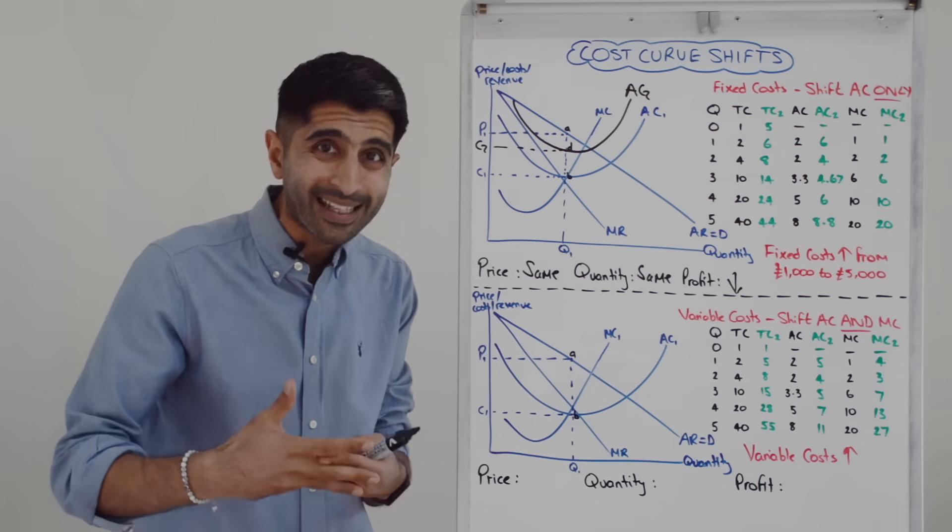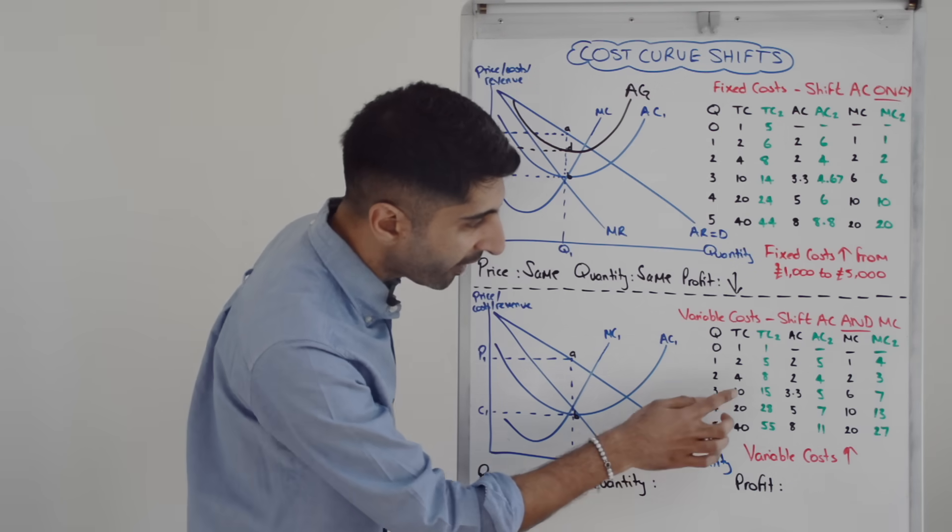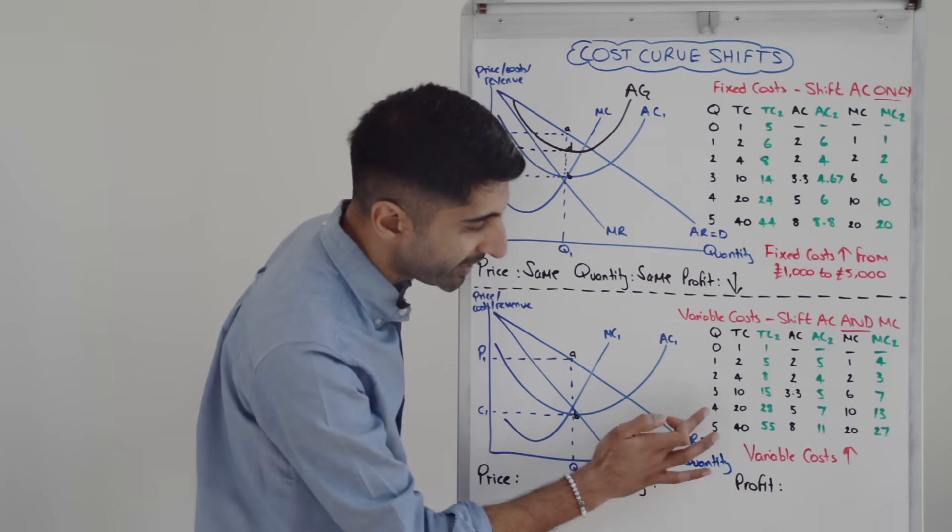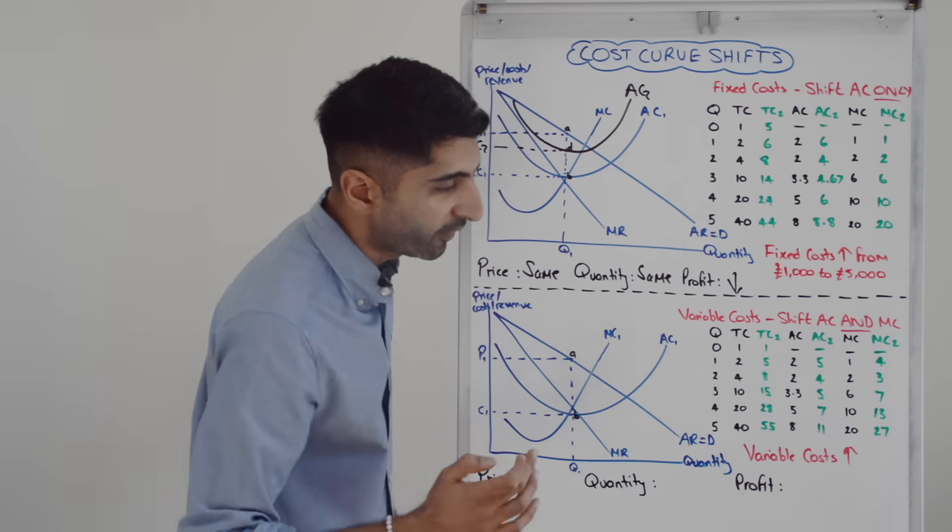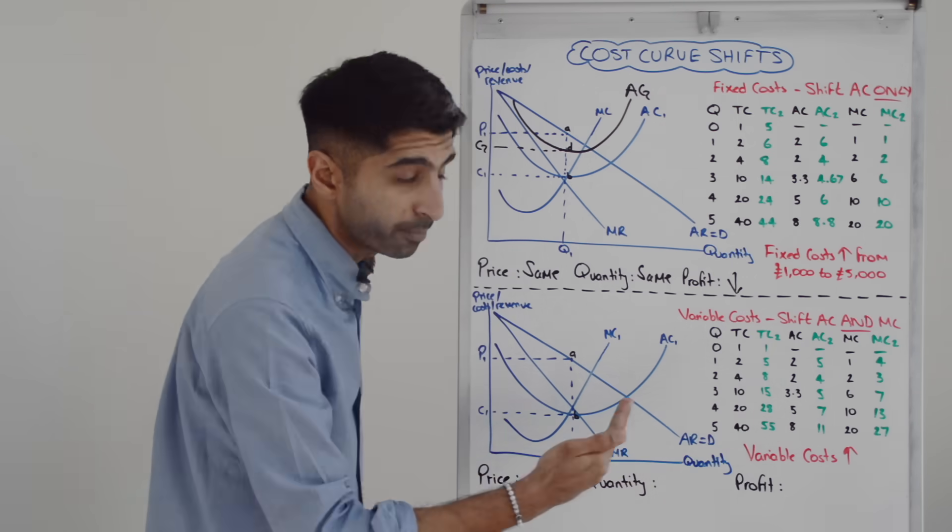So to work out average cost, we just take TC2 and divide it by quantity. So 5 divided by 1 is 5, 8 divided by 2 is 4, 15 divided by 3 is 5, 28 divided by 4 is 7, 55 divided by 5 is 11. So we can see average cost is now higher than it was before.